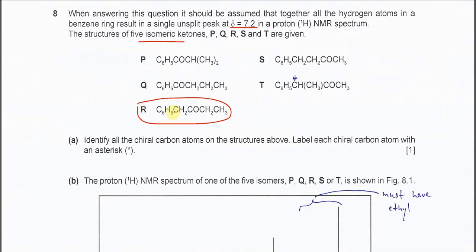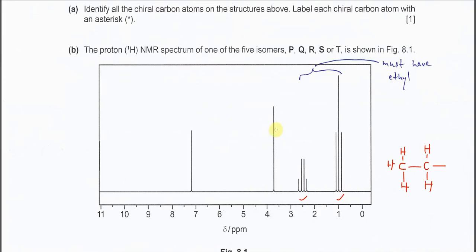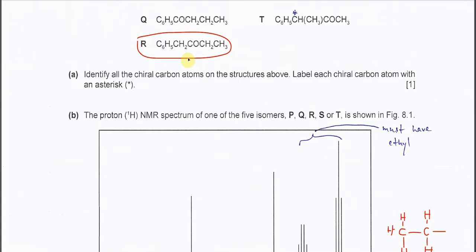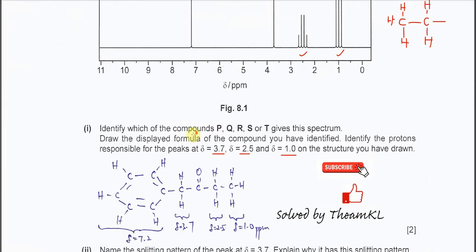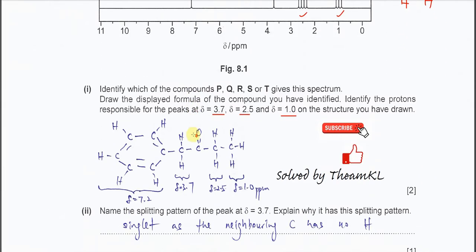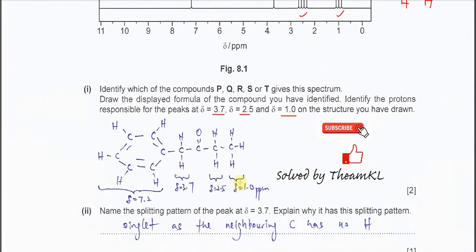So most likely R produces this NMR spectrum. You just need to draw the display formula of R. Let's look at the NMR spectrum one by one.